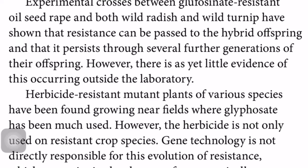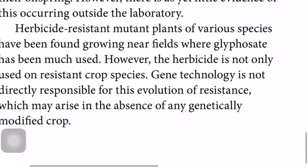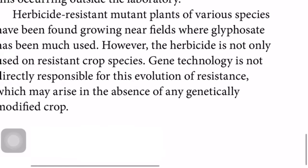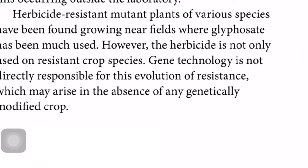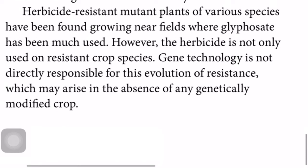Experimental crosses between glufosinate-resistant oil seed rape and both wild radish and wild turnip have shown that resistance can be passed to hybrid offspring and persists through several further generations. However, there is still little evidence of this occurring outside the laboratory.